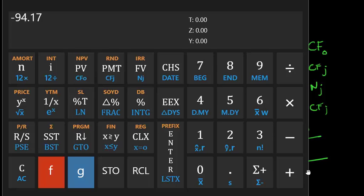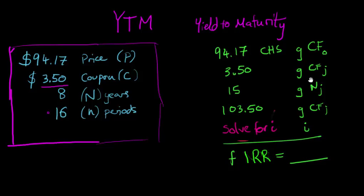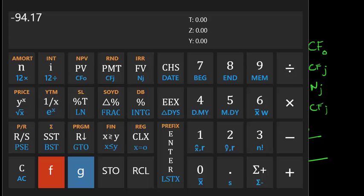Next, $3.50 coupon rate. So let's put the coupon amount in there. So $3.50, G, CFJ, so periodic cash flow.